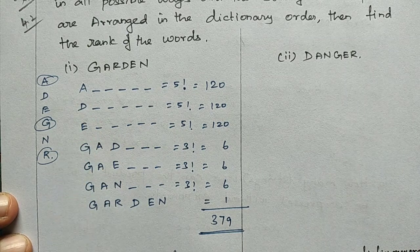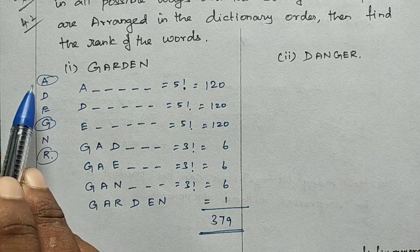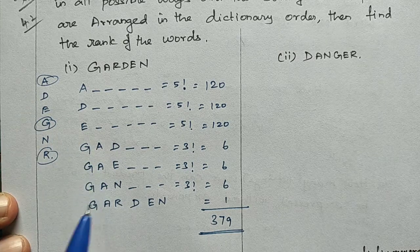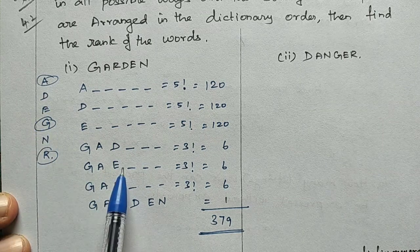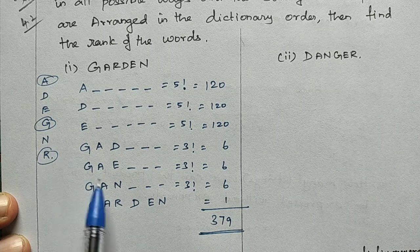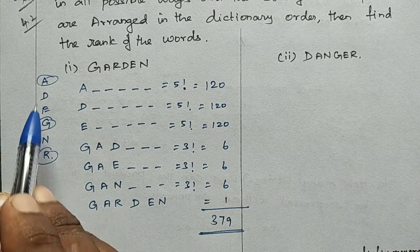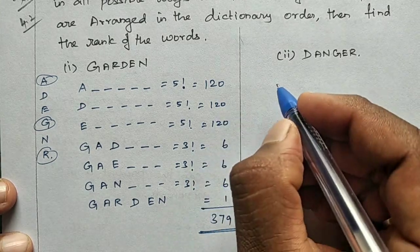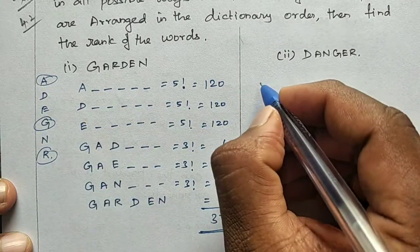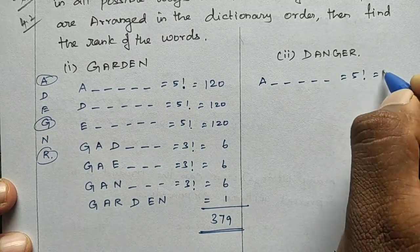Now for DANGER. Alphabetical order of letters: A, D, E, G, N, R. Words starting with A: 1, 2, 3, 4, 5 remaining letters, so 5 factorial = 120. Then we move to words starting with D.